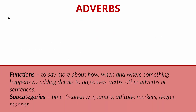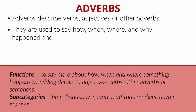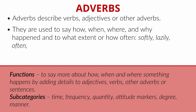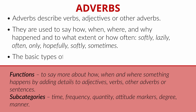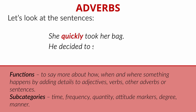Adverbs. Adverbs describe verbs, adjectives or other adverbs. They are used to say how, when, where and why something happened, and to what extent or how often. For example: softly, lazily, often, only, hopefully, sometimes. The basic type of adverbs is adverbs of frequency. Let's look at the sentences: 'She quickly took her bag.' 'He decided to start immediately.'